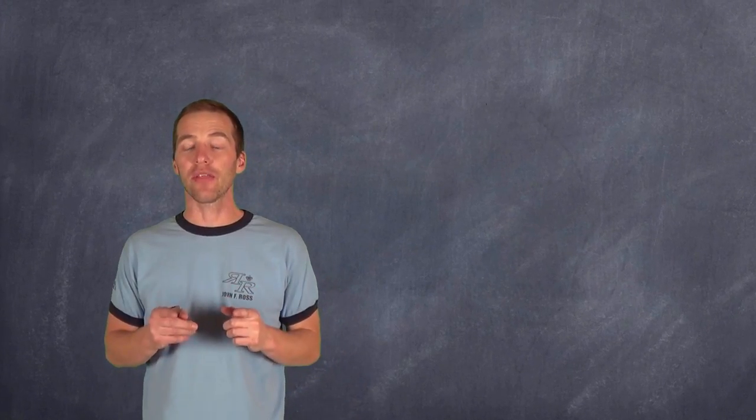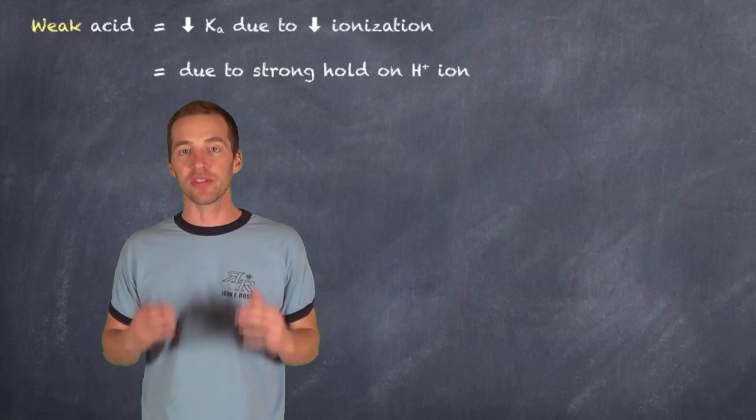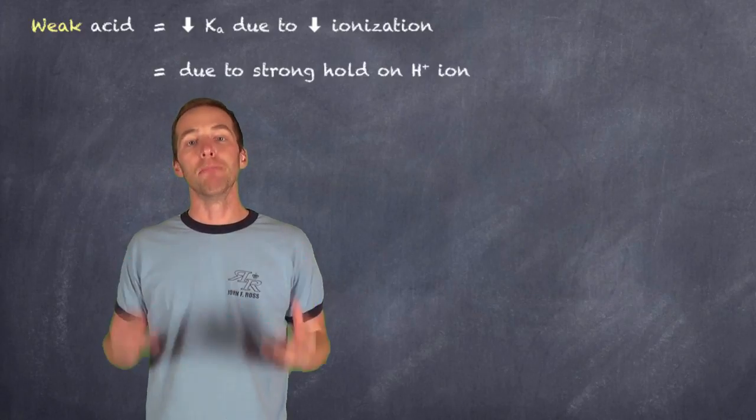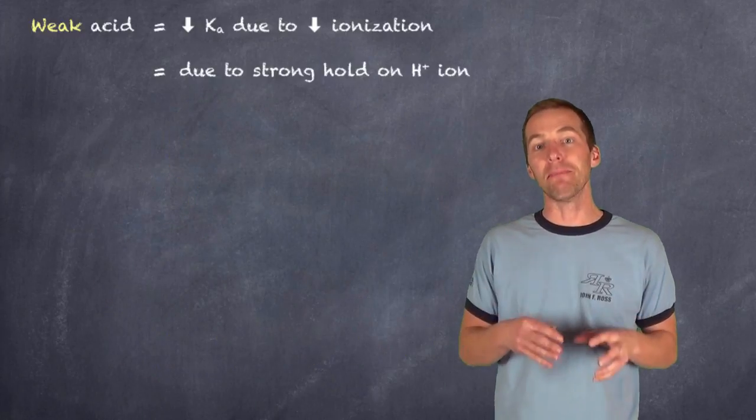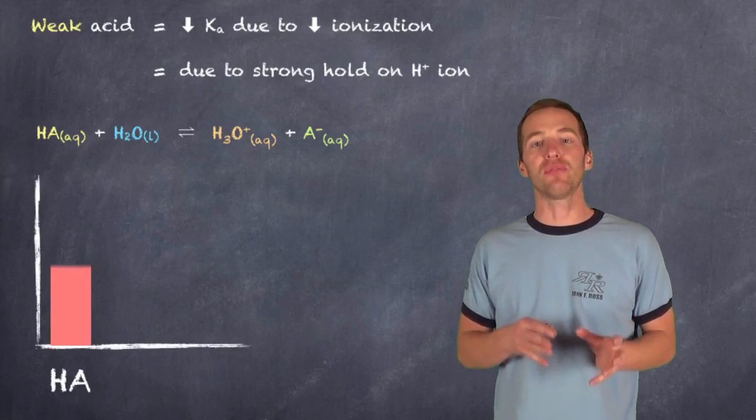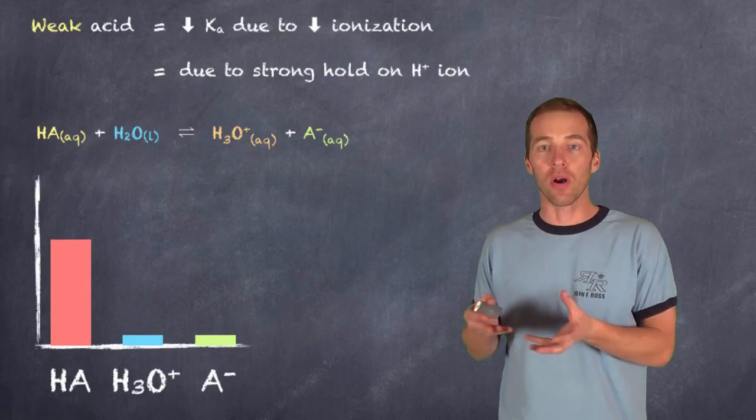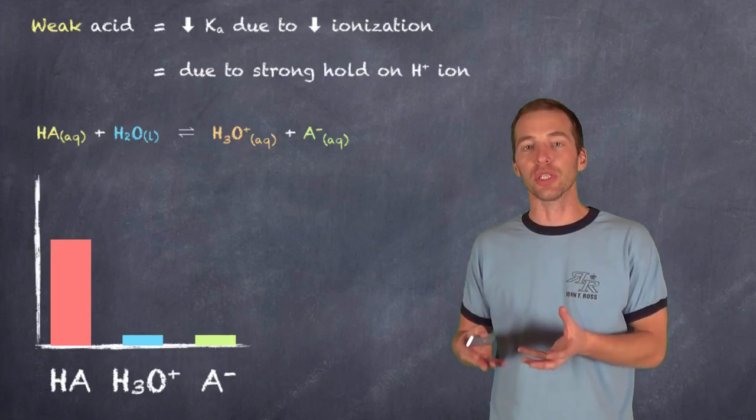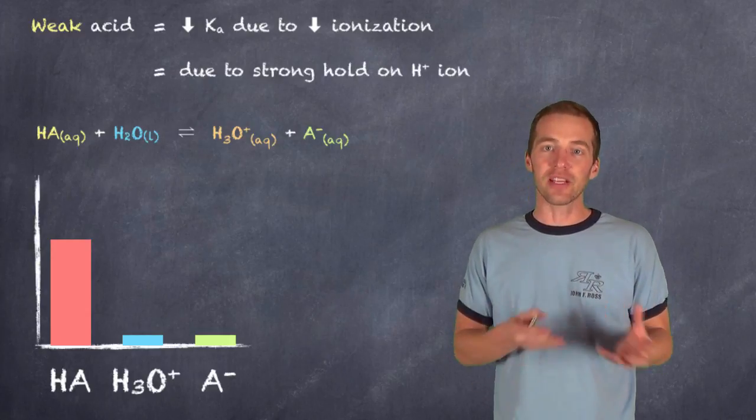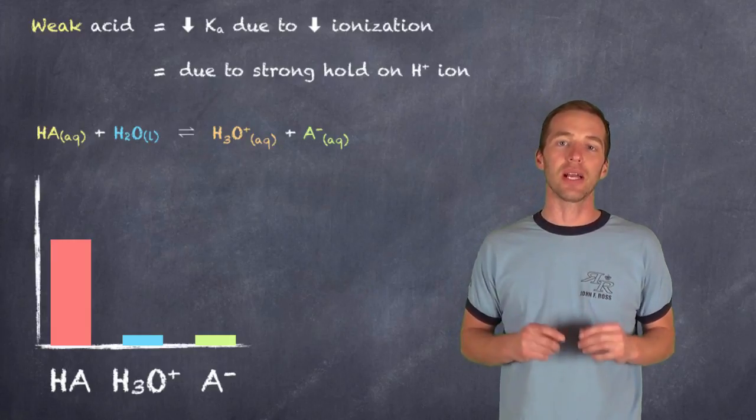Weak acids, on the other hand, have a very low Ka because they have a very low percentage of ionization. That is, most of a weak acid will dissolve in water and remain as acidic molecules in solution. Very few of those acidic molecules will ionize or form hydronium or hydrogen ions in solution.